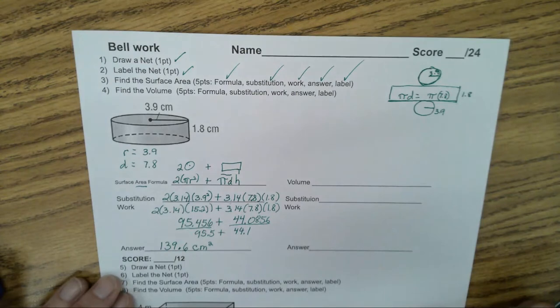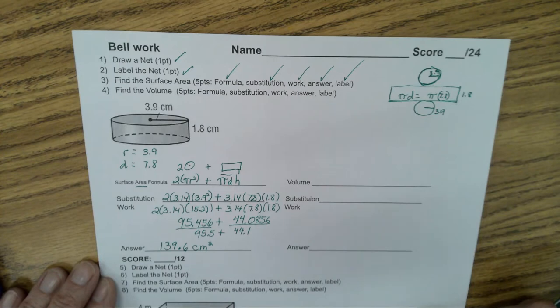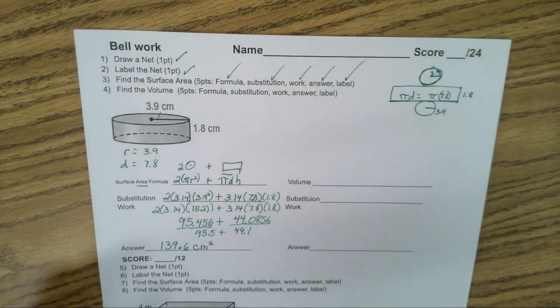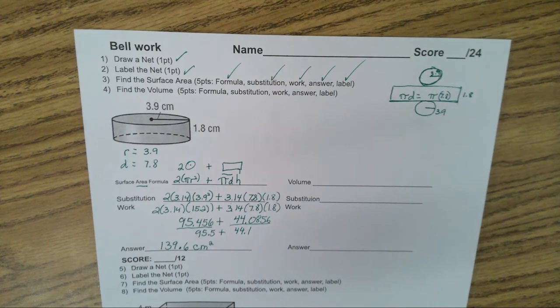Any questions before we start doing volume? Yes. The radius squared, do you want us to round that? No. Because 3.9 times 3.9 actually equals 15.21.